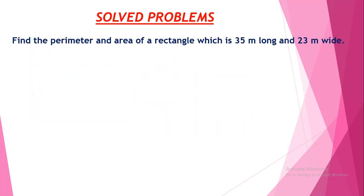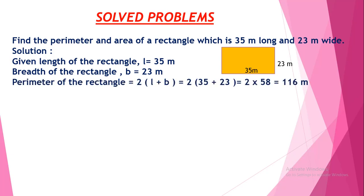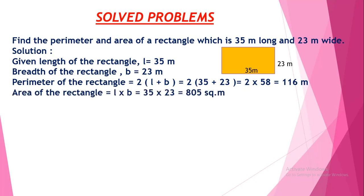Let us see some problems. Find the perimeter and area of a rectangle which is 35 meters long and 23 meters wide. Here is a rectangle whose length is 35 meters and breadth is 23 meters. Perimeter = 2 × (L + B) = 2 × (35 + 23) = 2 × 58 = 116 meters. Area = L × B = 35 × 23 = 805 square meters. Note the units: perimeter is in meters and area is in square meters.